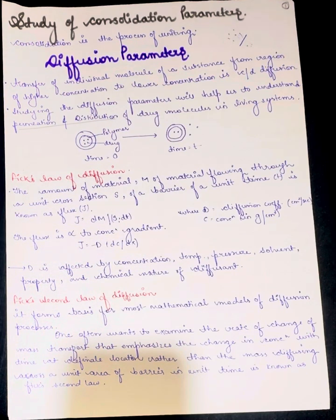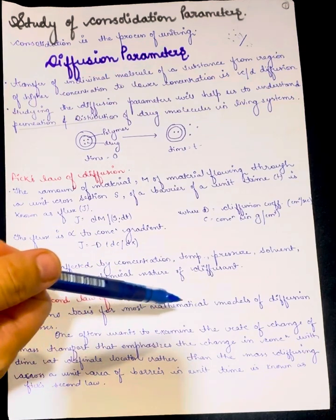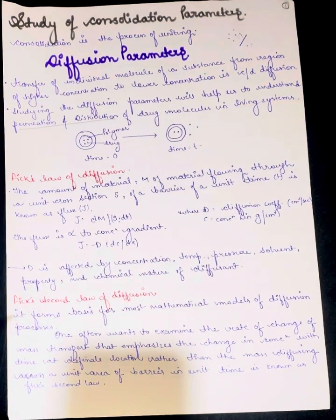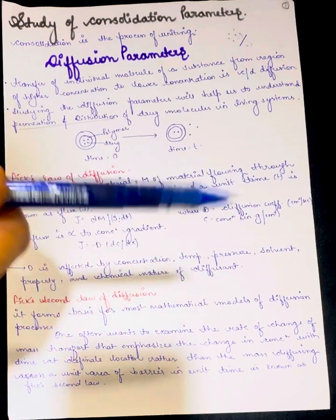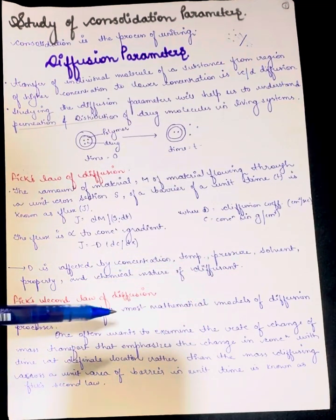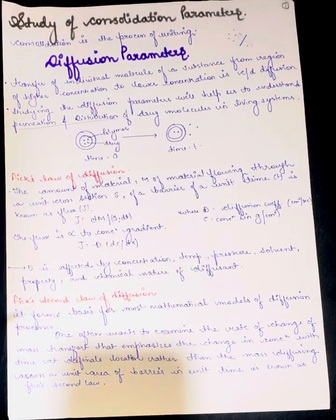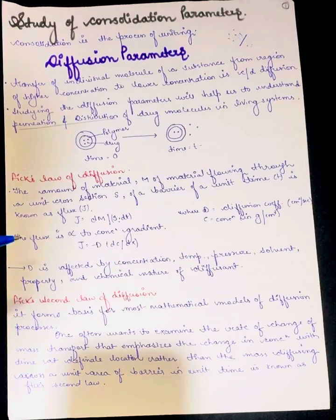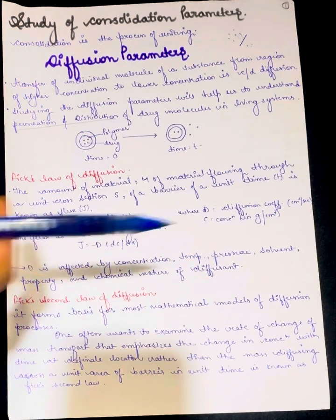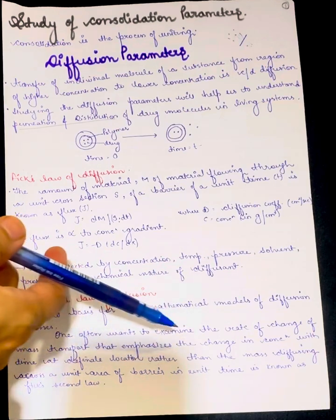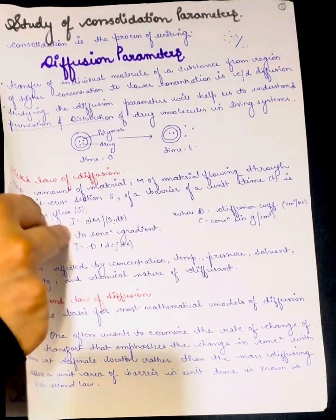Fick's second law of diffusion forms the basis for most mathematical models of diffusion processes. One often wants to examine the rate of change of mass transport that emphasizes the change in concentration with time at a definite location, rather than the mass diffusing across a unit area of barrier in unit time, which is known as Fick's second law.